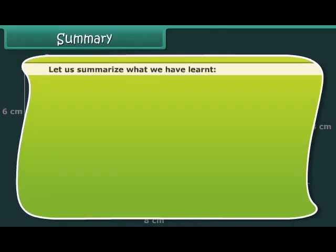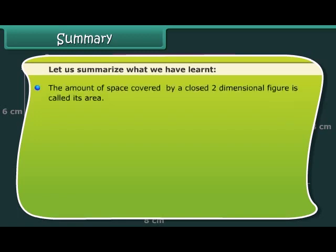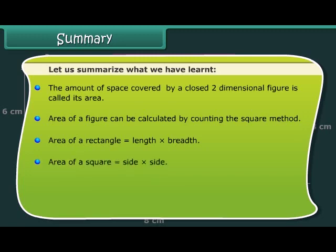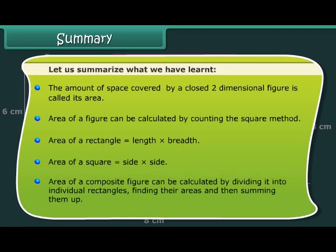Let us summarize what we have learnt. The amount of space covered by a closed two-dimensional figure is called its area. Area of a figure can be calculated by the counting the squares method. Area of a rectangle is equal to length into breadth. Area of a square is equal to side into side. Area of a composite figure can be calculated by dividing it into individual rectangles, finding their areas, and then summing them up.